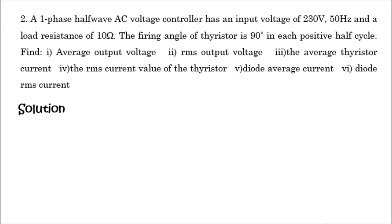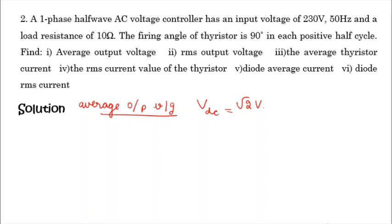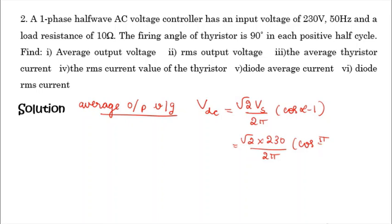The first thing to find is the average output voltage VDC. VDC is given by root 2 into Vs divided by 2 pi into (cos of alpha minus 1). Substituting root 2 into Vs as 230 divided by 2 pi and cos of alpha minus 1, you will get 43.56 volts.